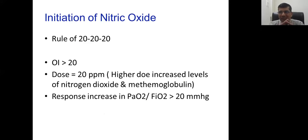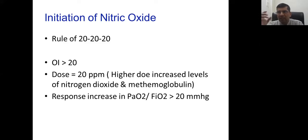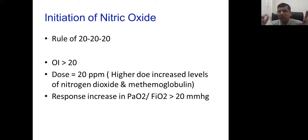I start nitric at OI 15, not waiting till 20. Starting dose is 20 ppm. Response is seen in 10–20 minutes: improvement in saturation, PO2, and PO2/FiO2 ratio. The beauty of nitric oxide — within 5 minutes the resident comes and says saturation is improving — the whole team is happy. That's why it's called a magic drug. For weaning: I wait till FiO2 is 50%, PO2 more than 60 and less than 80, saturation 90–95%, then start weaning — reducing by 1 ppm every 4 hours, then 1 ppm per day.